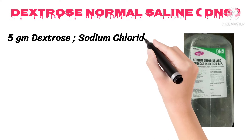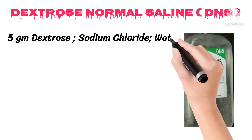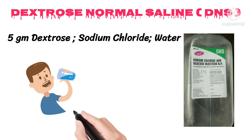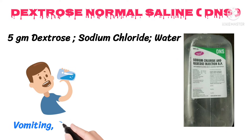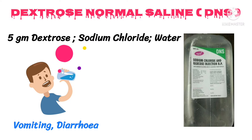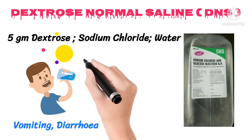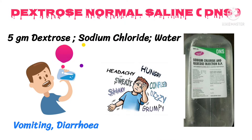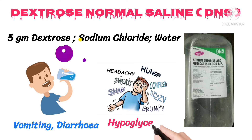Most commonly dextrose normal saline is used in conditions of dehydration like vomiting, diarrhea, etc. And as DNS contains dextrose, it is commonly used in conditions of hypoglycemia, that is in conditions where there is a rapid fall of blood sugar levels.